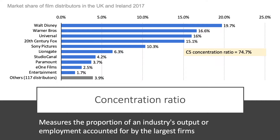Concentration ratio. This is a measure of the extent to which sales in a market are highly concentrated in the hands of just a few firms. My example is the film distributor industry in the UK and Ireland in 2017. The top five film distributors ranked by market share, based on box office gross figures — including Disney and Warner Brothers — accounted for 74.7% of the market. Highly concentrated market, effectively oligopoly.